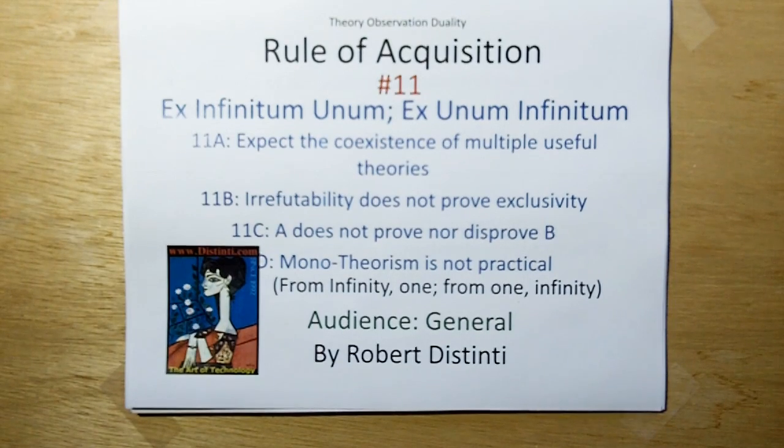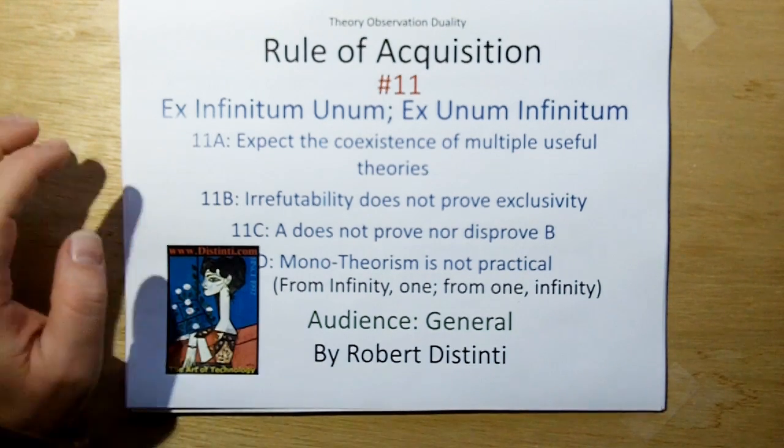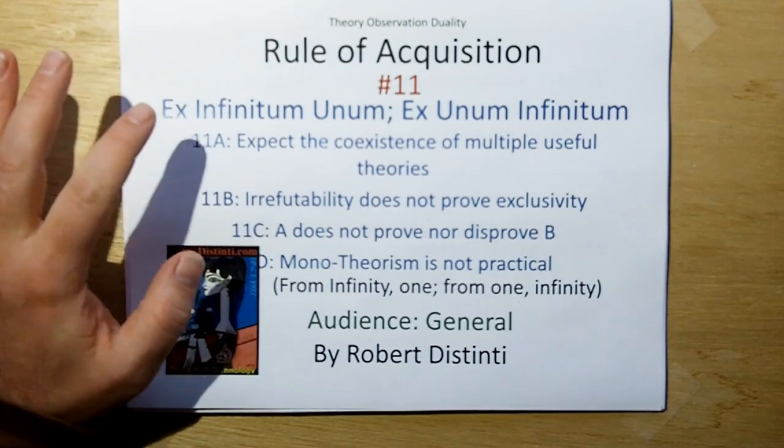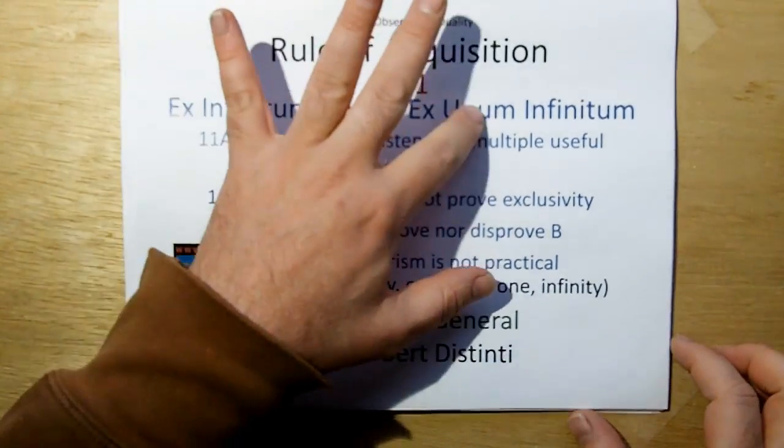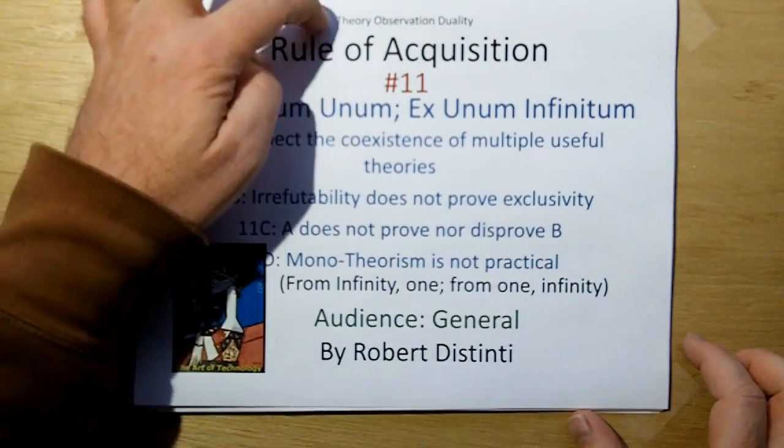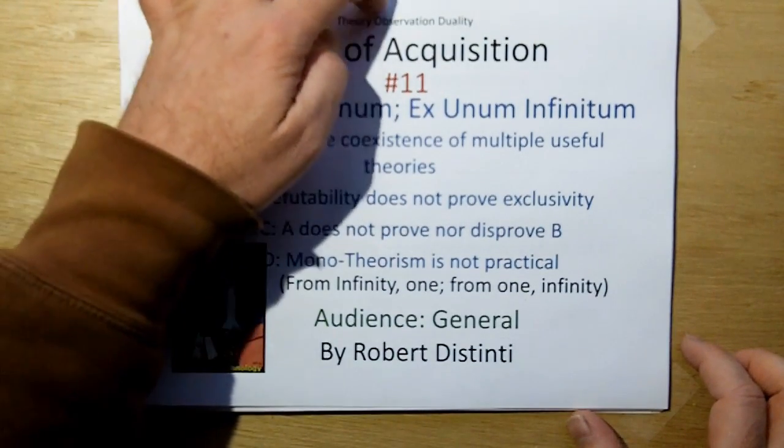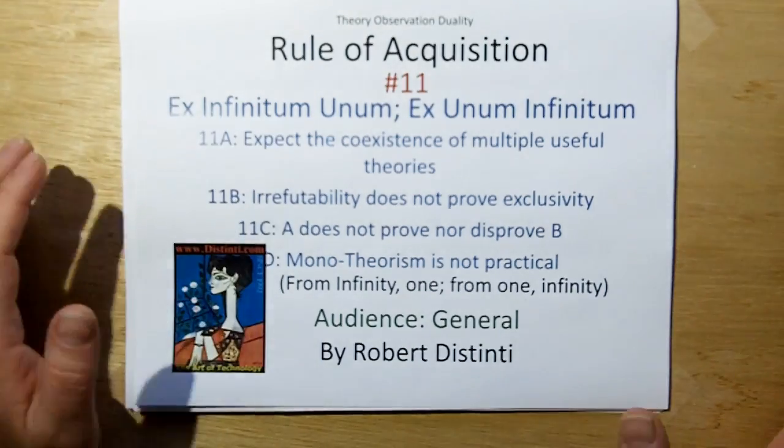Hi, welcome to Rule of Acquisition number 11. Ex infinitum unum, ex unum infinitum, which means, it's the Latin for from infinity one, from one infinity, which is a theory-observation duality, and I'll explain what that means.